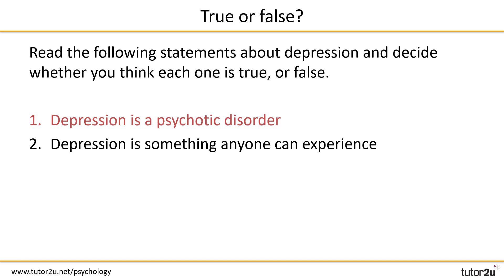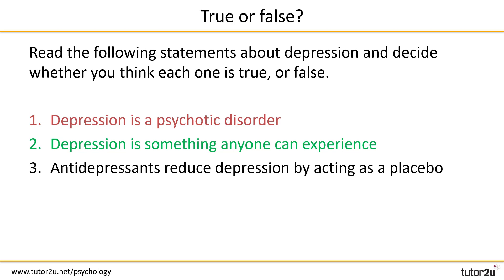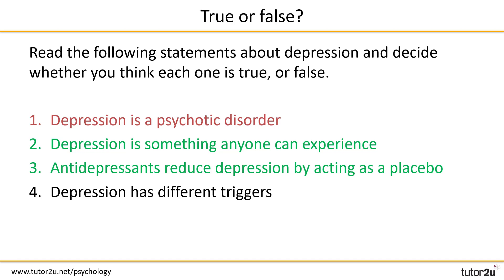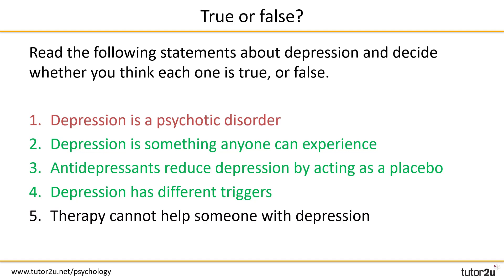Number two: depression is something anyone can experience — this is absolutely true. Number three: antidepressants reduce depression by acting as a placebo. Whilst we know that antidepressants do physiologically impact the body, there are some claims that they can act as a placebo — people may start to feel better because they've been to a medical professional and had that conversation. Number four: depression has different triggers — again, this is true. Number five: therapy cannot help someone with depression — this is false. So there's a quick introduction to the disorders you'll study in psychopathology.